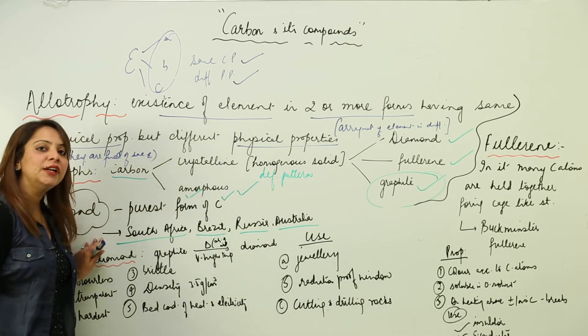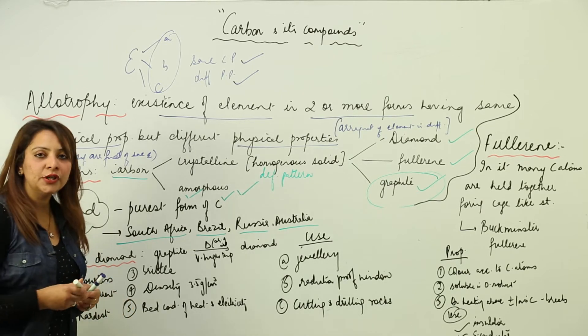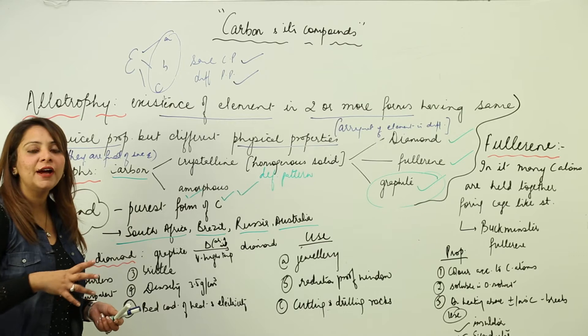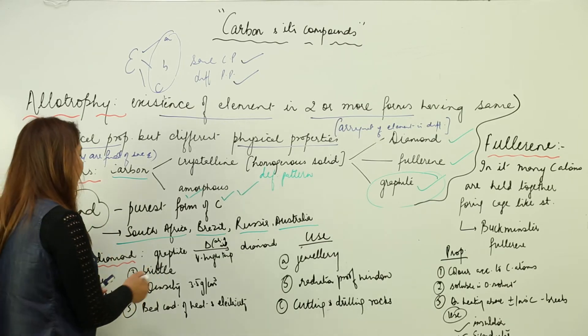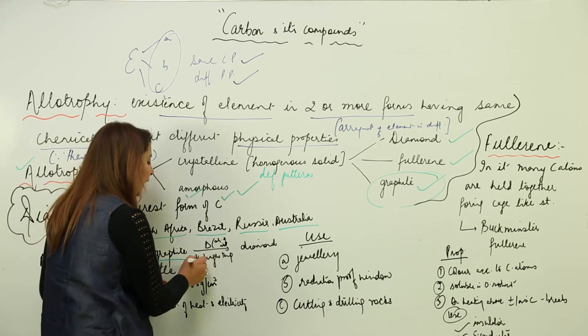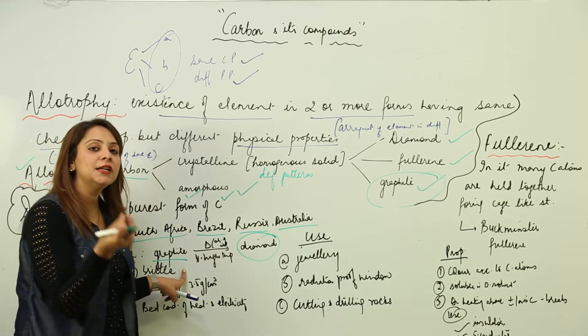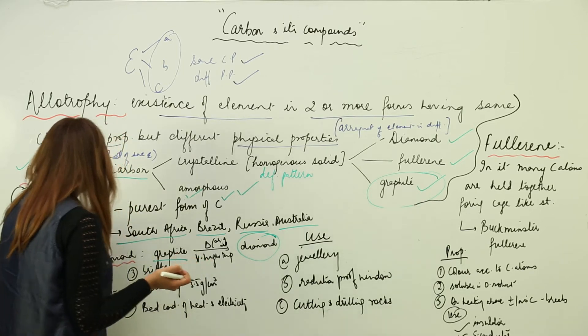We can also prepare diamond artificially by subjecting graphite to very high temperature. When we take graphite and heat it in the absence of air at very high temperature, it gets converted into diamond. But the diamond obtained here is in the form of very small crystals.